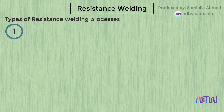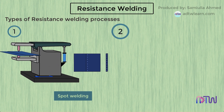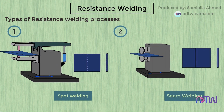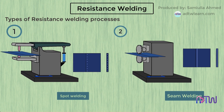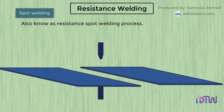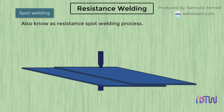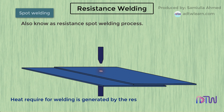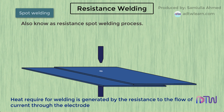1. Spot welding. 2. Seam welding. Spot welding is also known as the resistance spot welding process. It is used to weld thin sheets of metal together by applying pressure. The heat required for welding is generated by resistance to the flow of current through the electrode.